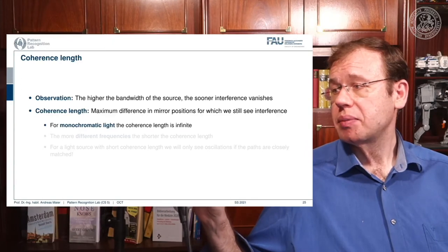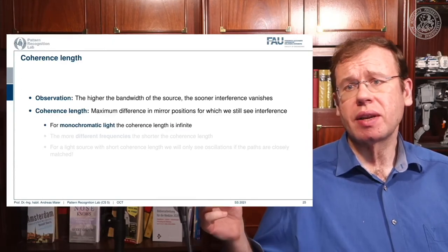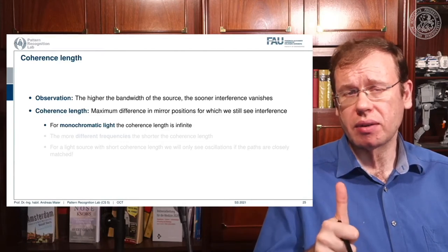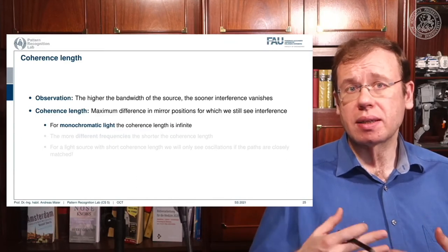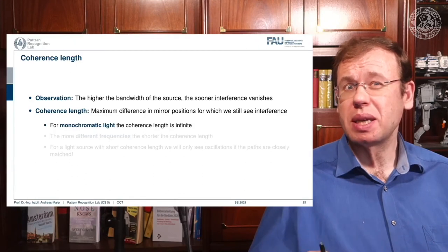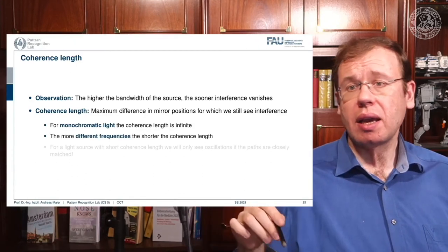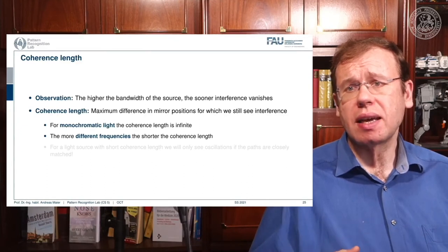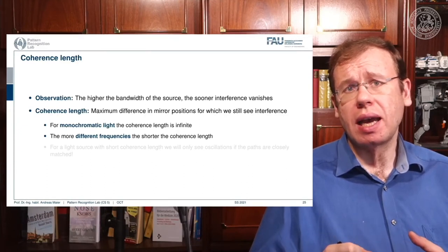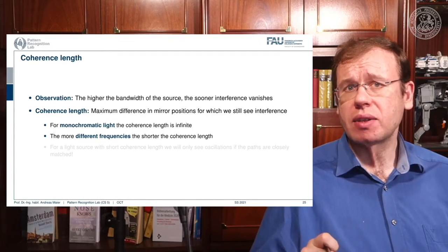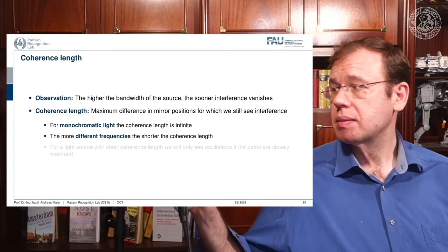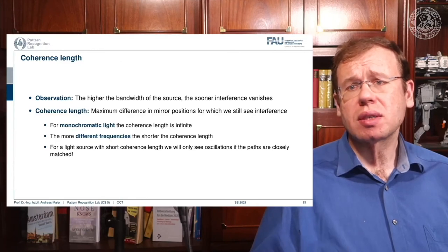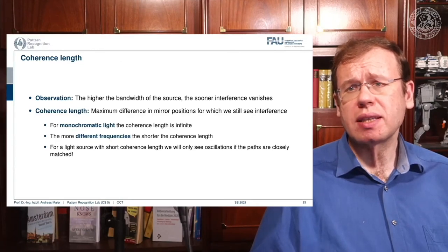For monochromatic light, the coherence length is infinite — a single wavelength means I can move the mirror anywhere and always get an interference pattern, but it repeats continuously. With more different frequencies, the coherence length becomes shorter, producing a shorter interference effect but also a shorter, more localized pulse. For a light source with short coherence length, we will only see oscillations if the two paths are closely matched.